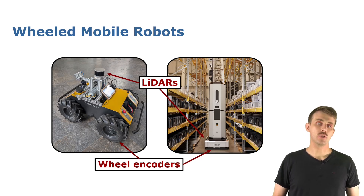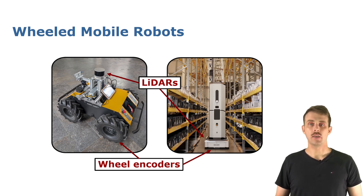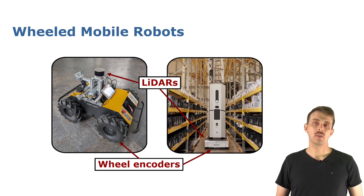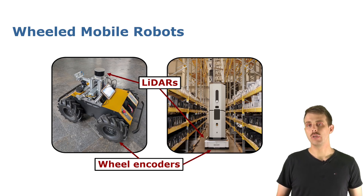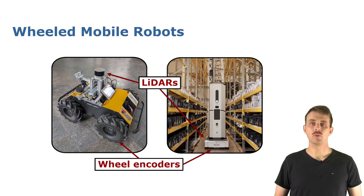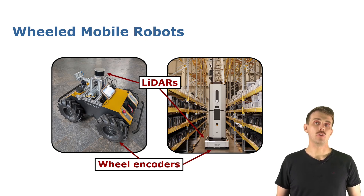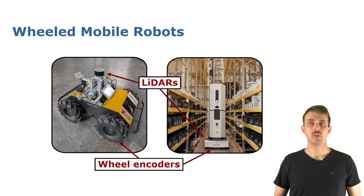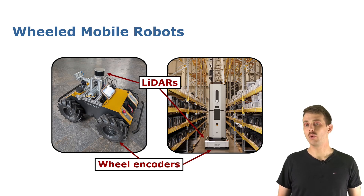Today we will focus on wheel encoders and LiDARs. With wheel encoders we measure, for example, the revolutions of a wheel and can then, using a motion model, integrate these to get the relative motion. With LiDARs we can get measurements of our surroundings, align these with the model that we build on the fly to estimate how the robot has moved — basically find the pose that best explains the measurements.